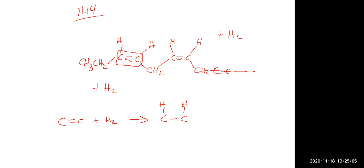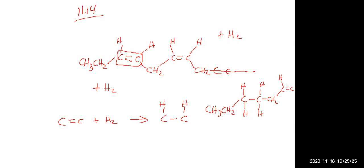So one of the ways you can draw the product would be turning that first double bond into a single bond, and then the rest of it would be exactly the same. Everything to the right there would be exactly the same — the only thing that would change is just that first double bond became a single bond.